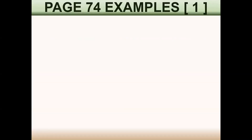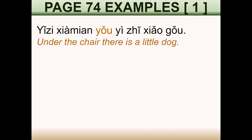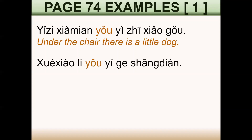Let's see examples on page number 74 in the book. The first one: under the chair, there is a little dog. Again, in English we say 'there is a little dog under the chair,' but we have this structure that we have to respect in Chinese. Second example: 学校里有一个商店 — in the school, there is a shop.